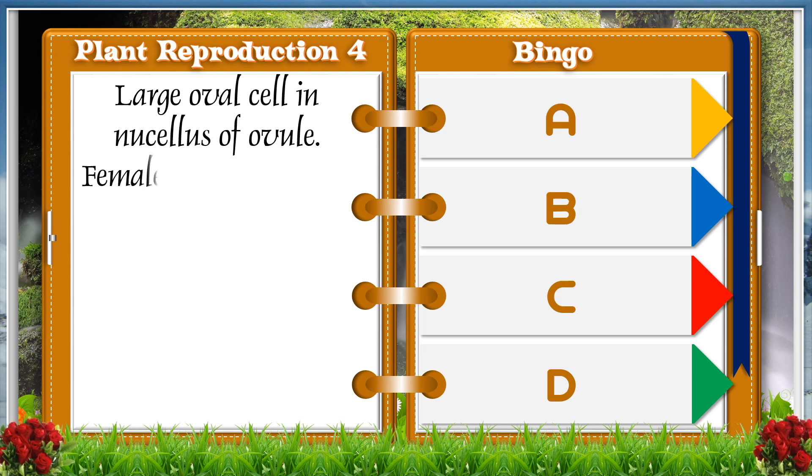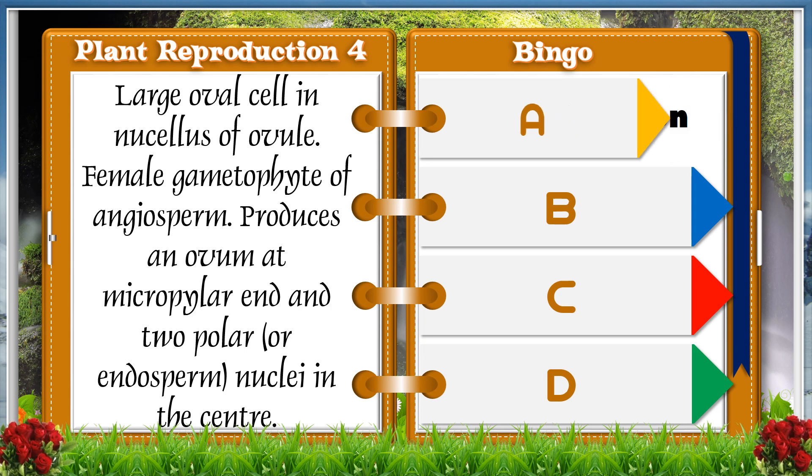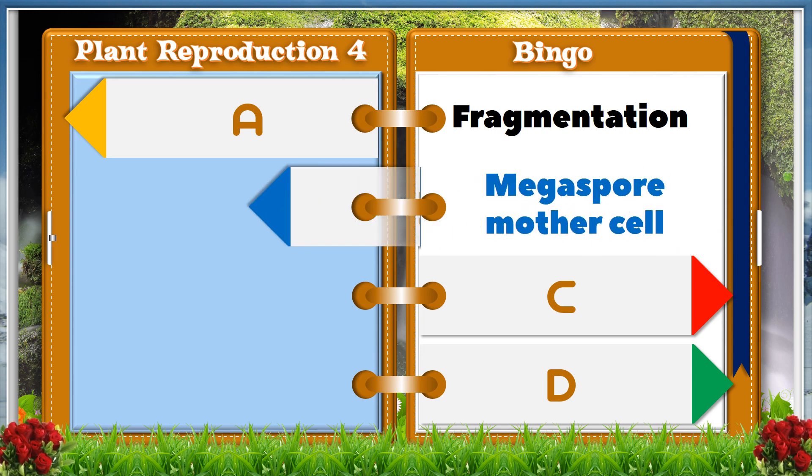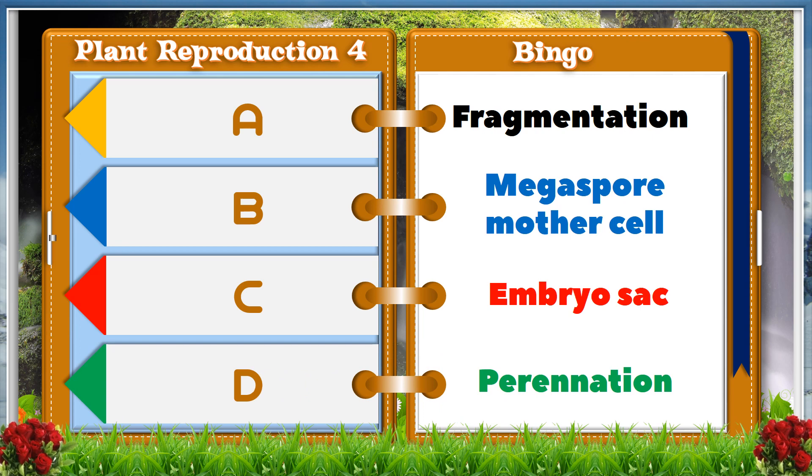Large ovule cell in the nucellus of ovule, female gametophyte of angiosperm, produces an ovum at micropylar end and two polar or endosperm nuclei in the center. A. Fragmentation. B. Megaspore mother cell. C. Embryo sac. D. Perennation. And the answer is C, Embryo sac.